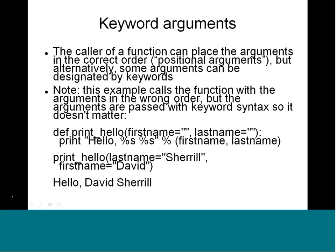Keyword arguments: the caller of a function can place arguments in the correct order — that is the positional argument. This is something we saw in Tcl as positional versus non-positional. Sometimes we can change the order by assigning keywords. Here is an example of a function with arguments passed in the wrong order, but with keyword syntax so that it does not matter.